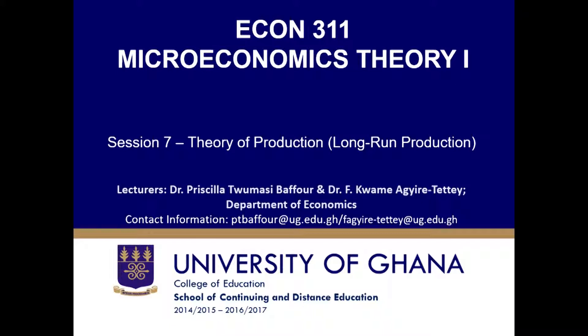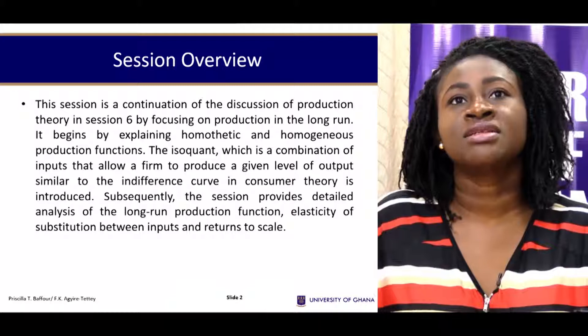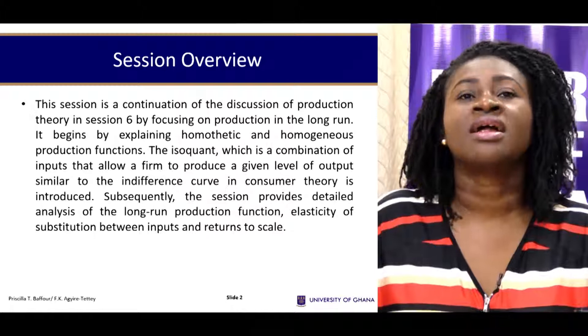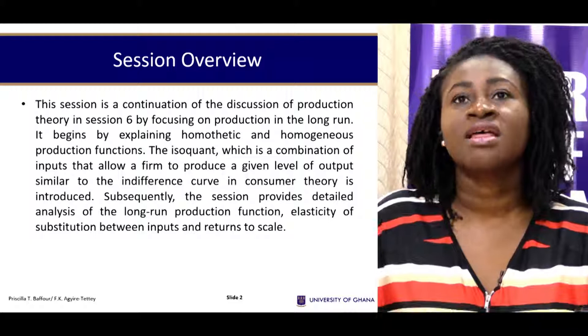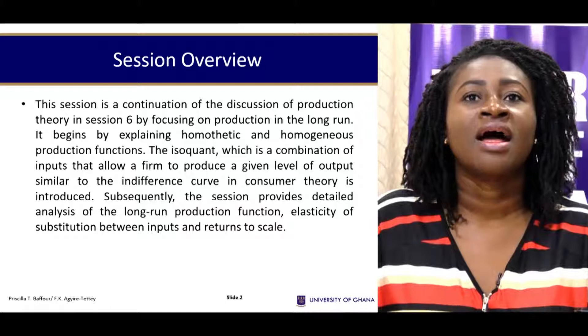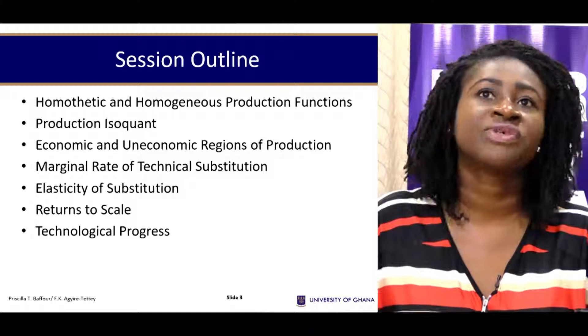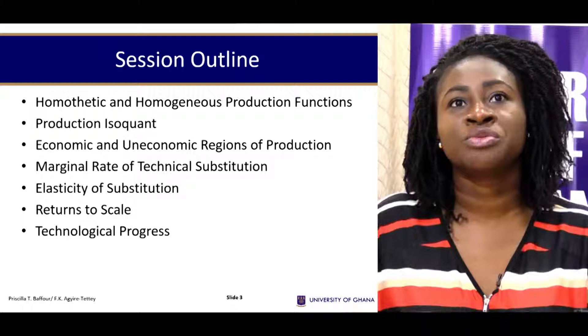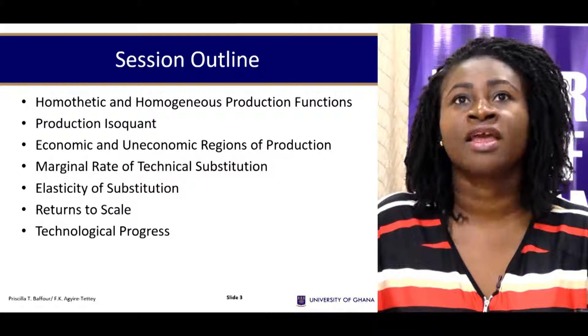Hello once again and welcome to Section 7, which is still on production theory but this time treating production in the long run. This section continues by focusing on production in the long run and begins by explaining homothetic and homogeneous production functions, isoquants — which are combinations of inputs that allow firms to produce units of output — and will subsequently provide details on the long-run production function. The outline covers homothetic and homogeneous production, isoquants, and more.